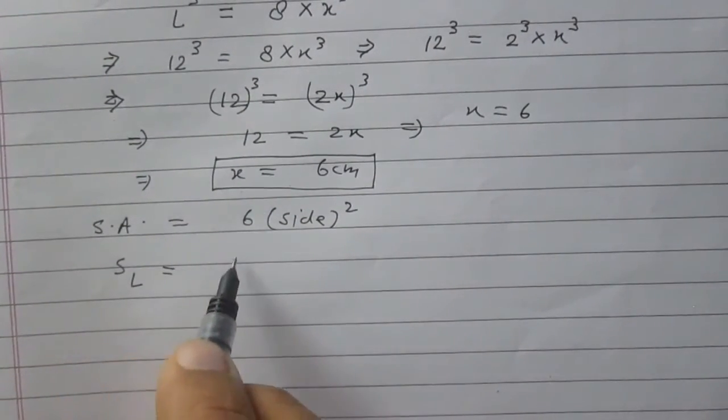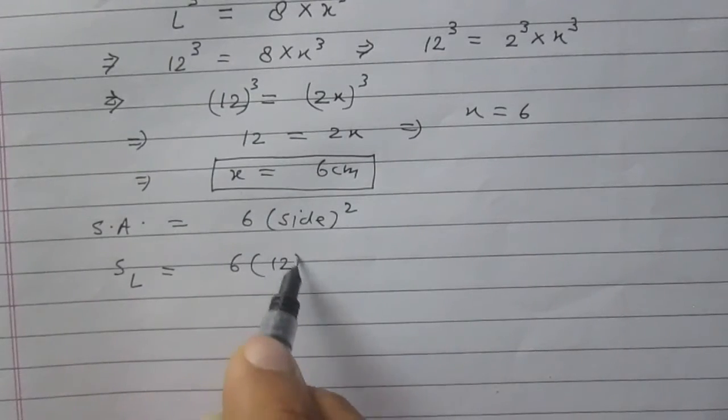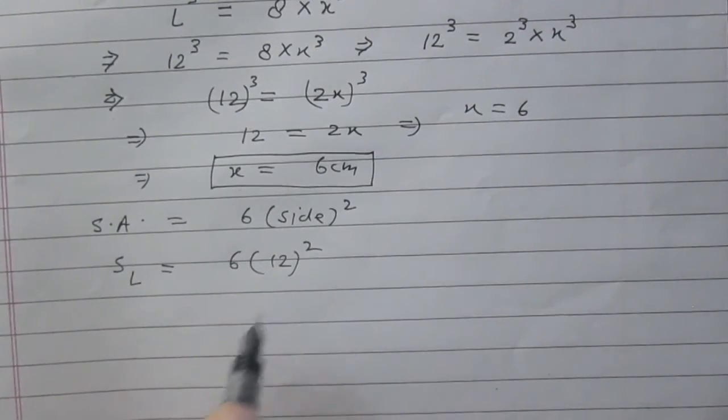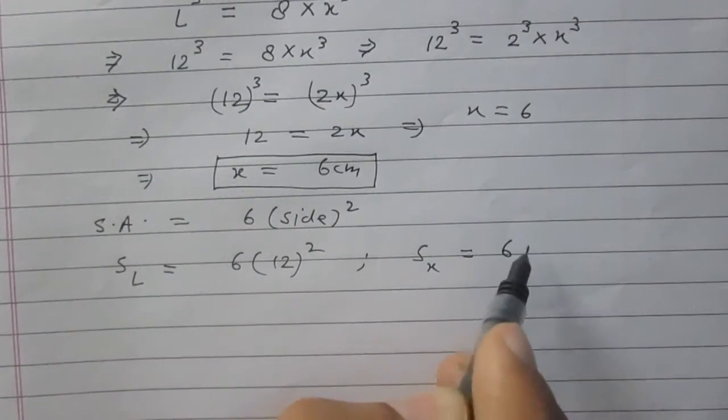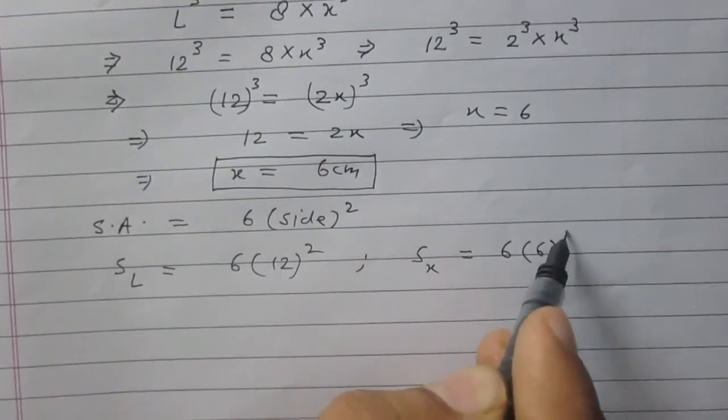Surface area of the larger cube is 6 times 12 square. And surface area of the smaller cube is 6 times 6 square.